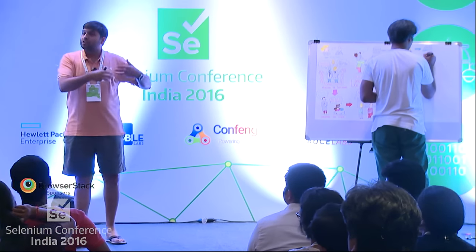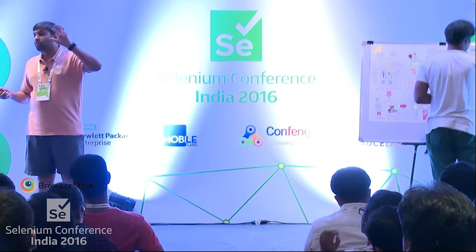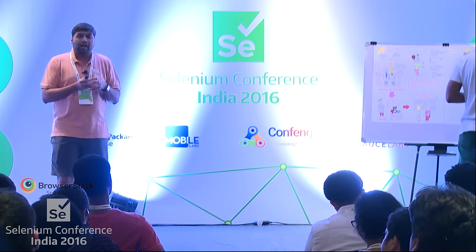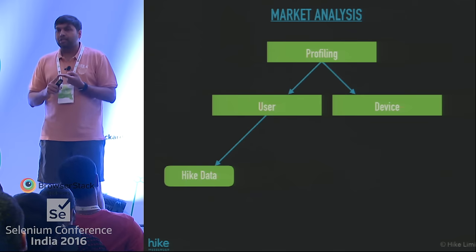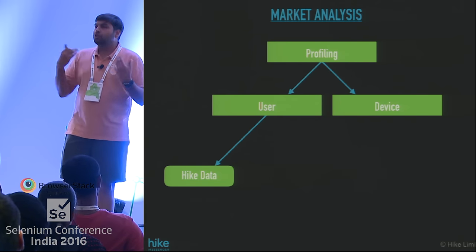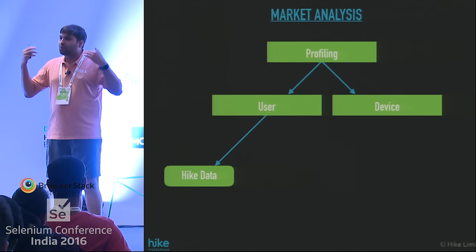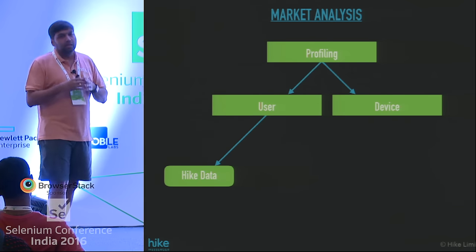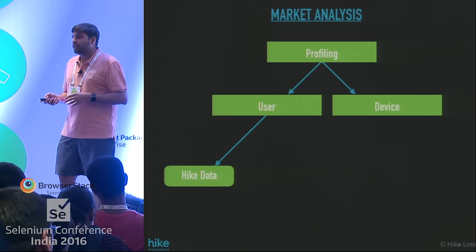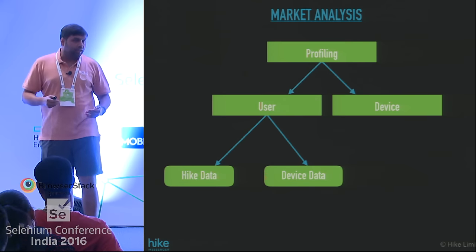You need to do profiling on the user side and on the device side. On the user side, we look at Hike-specific data: how many chat threads do you have open, how many active chats — five active chats versus 500 chat threads would affect app launch time differently. How many sticker packs downloaded, how many groups created. On the device side: how many contacts in your address book, how many photos in your gallery — all of this is user-specific data that impacts performance.